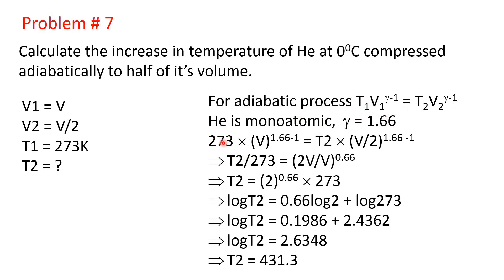Putting in the values: 273 × V to the power (1.66 − 1) equals T2 × (V/2) to the power (1.66 − 1). So T2 equals 2 to the power 0.66 times 273, since V cancels out.